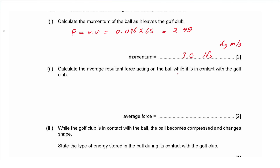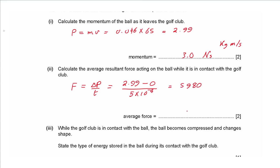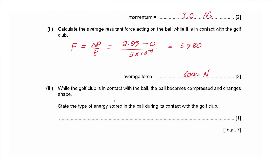Part ii: calculate the average resultant force acting on the ball while in contact with the golf club. Force equals change in momentum divided by time. Initial momentum was zero, so: 2.99 minus 0 over 5.0 × 10⁻⁴ seconds gives 5980 N, approximately 6000 N.